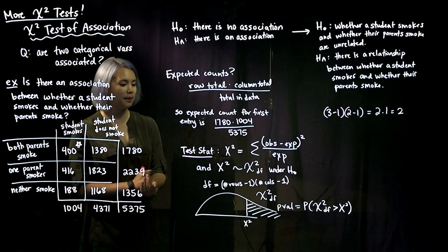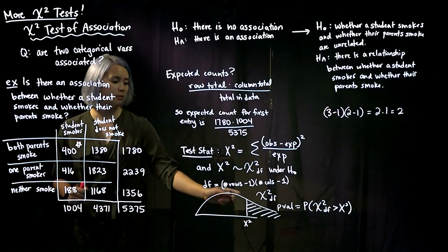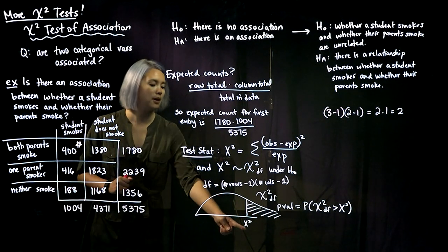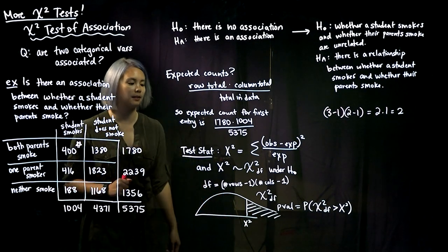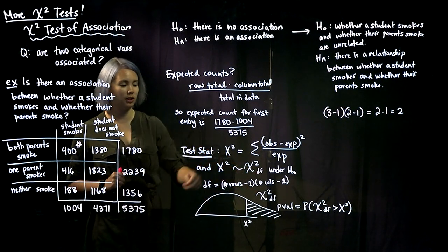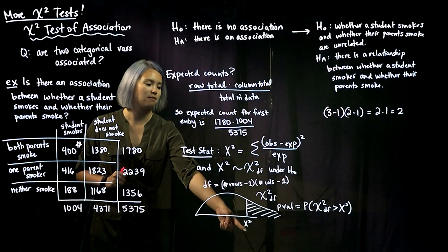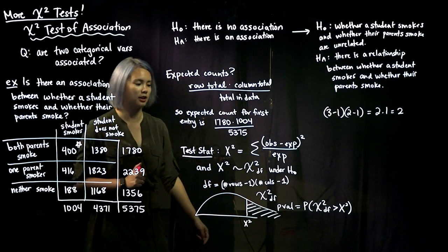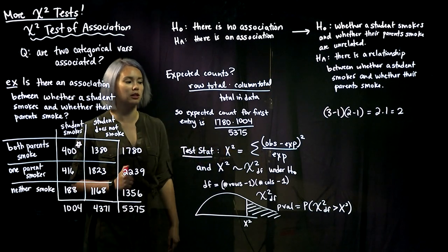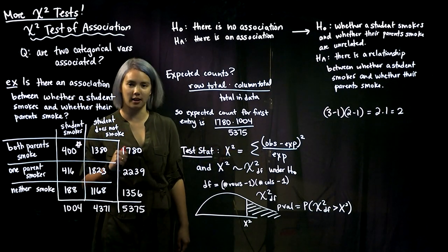We have our test stat and its sampling distribution under the null hypothesis. Just like in the previous video, our p-value is the area under the curve above that test stat. Here's our chi-squared distribution with the appropriate degrees of freedom — the test stat is marked, and that upper tail area is our p-value: the probability that a chi-squared distribution with that many degrees of freedom exceeds our test statistic x-squared.